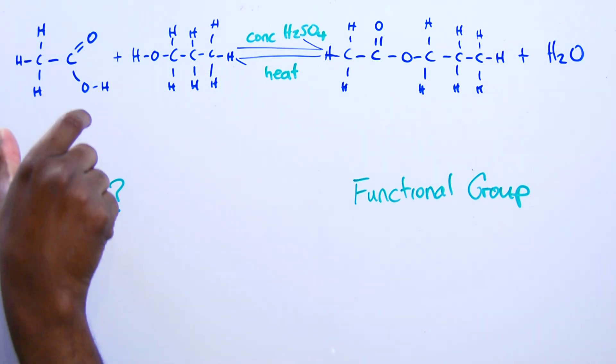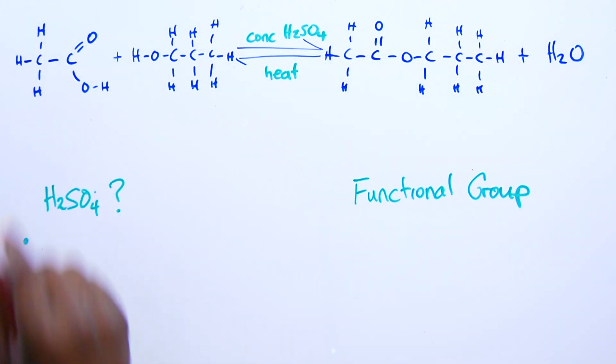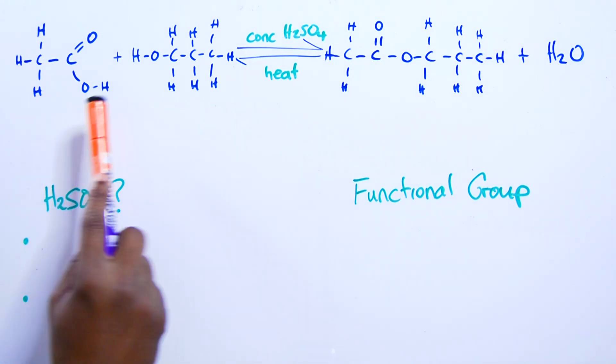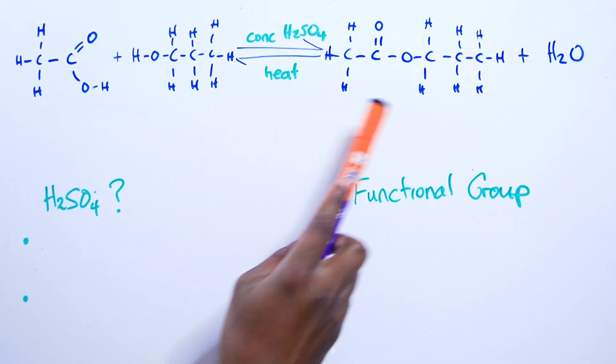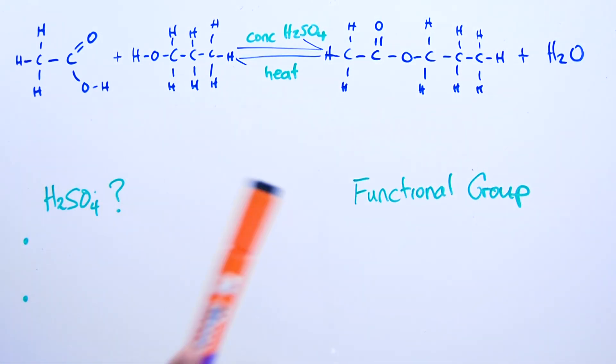Remember esters are the combination of acids, alkanoic acids. We write the acid first when we write the equation. Acid plus the alcohol. Acid plus alcohol giving you the ester and water. This process is called esterification.